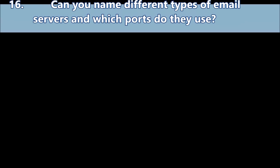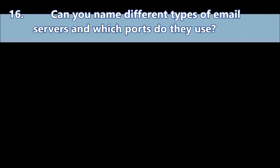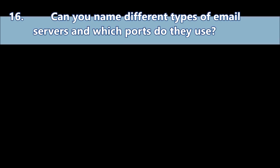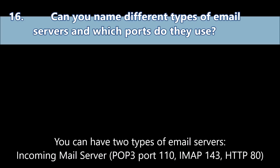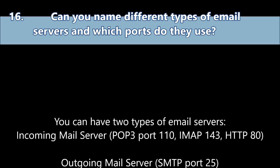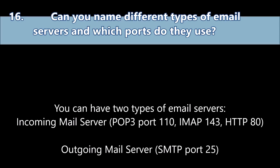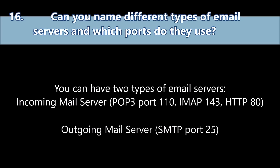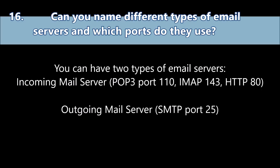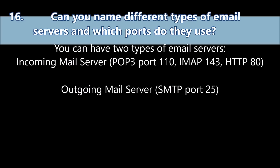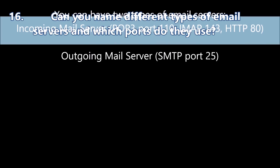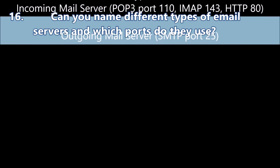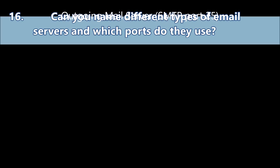Question number sixteen: Can you name different types of email servers and which ports do they use? You can have two types of email servers. Incoming mail servers: POP3 on port 110, IMAP on port 143, and HTTP on port 80. You can also have an outgoing mail server — SMTP — that uses port 25.